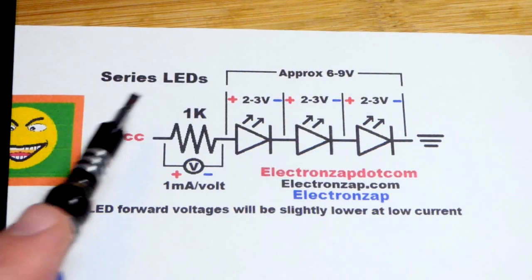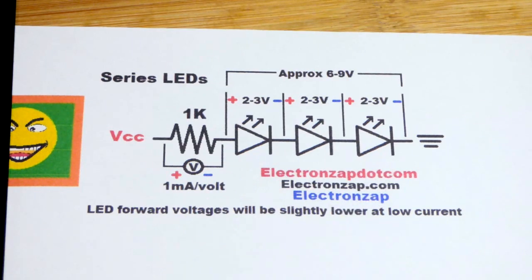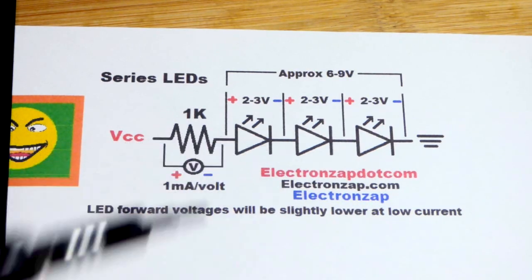So now in this video we're going to look at series LEDs. What we talked about here applies to other diodes as well. They have a forward voltage.